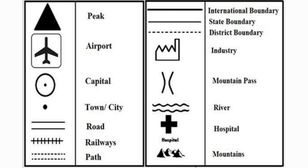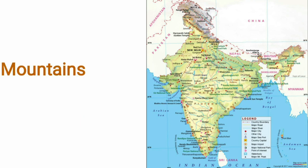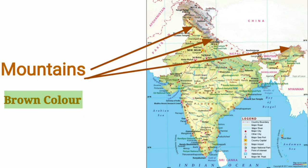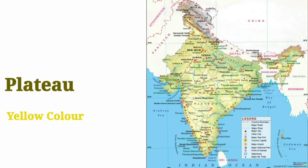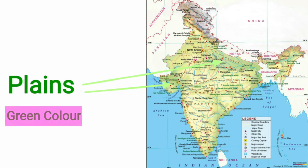For example, water bodies are shown in blue color, mountains in brown color, plateaus in yellow color, and plains in green color.